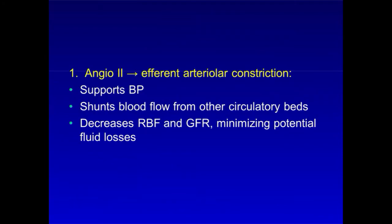First, it constricts arterioles, especially renal efferent arterioles. This supports arterial blood pressure and shunts blood away from the kidneys to protect vascular beds that cannot tolerate dips in blood flow, such as the coronary, pulmonary, and cerebral circulations. By decreasing renal blood flow and GFR, A2 helps to minimize potential fluid losses through the kidneys.